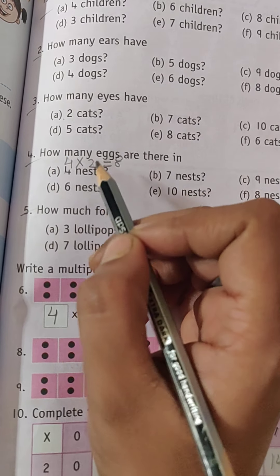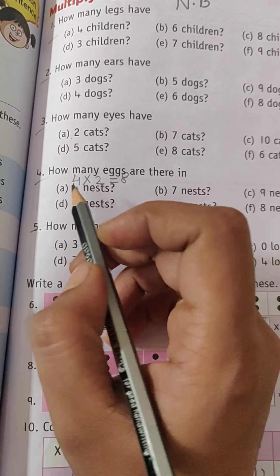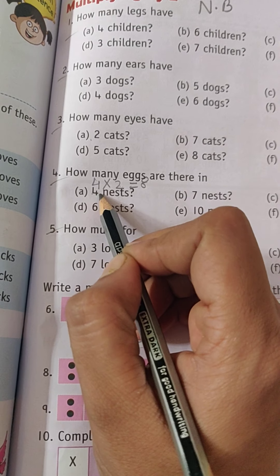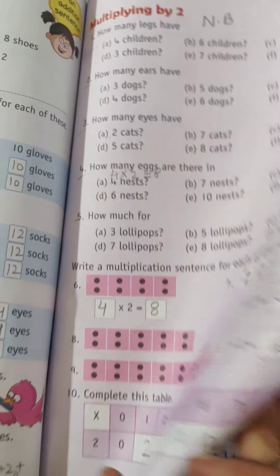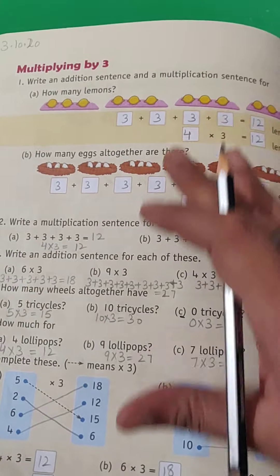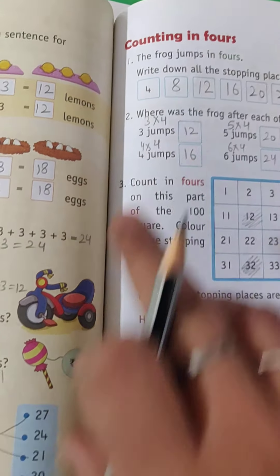In multiplication, how many times you are repeating - that number should come first, and which number you are repeating should come afterwards. The same things are applicable in all these types of questions where you are multiplying by three, then counting in fours. Everything will be the same.